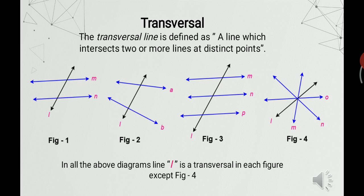Similarly, in figure 3, lines M, N and P are parallel lines and a line L intersects these lines at distinct points, so L is a transversal in this case as well. But in figure 4, we see that L, M, N and O are intersecting each other at a single point. Since L is not intersecting these lines at distinct points, L is not a transversal in this case.